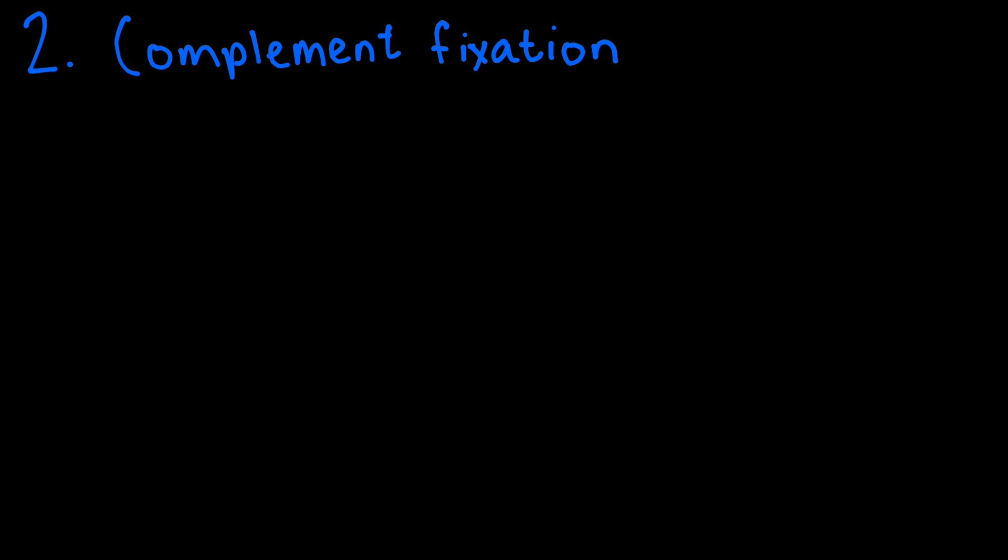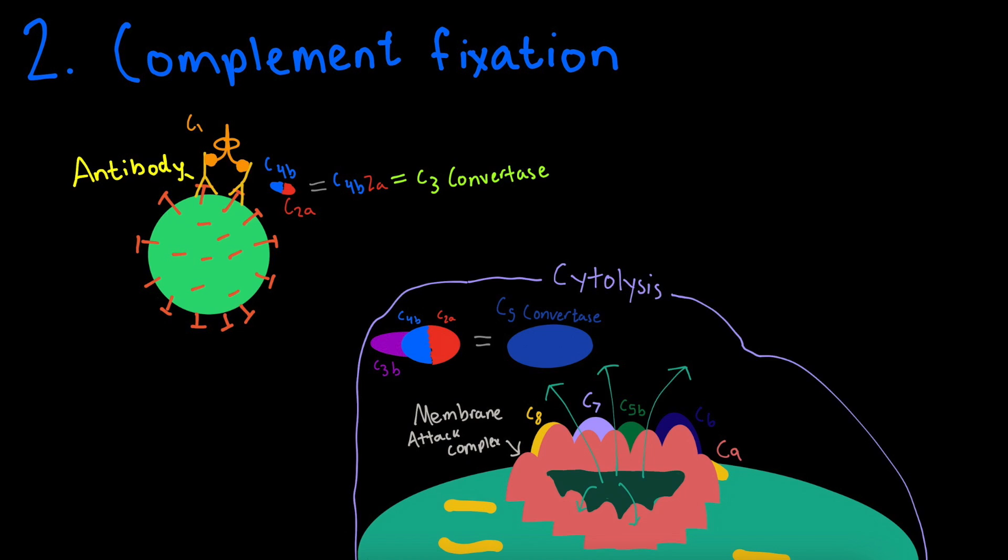The second mechanism includes complement fixation in which antibodies will bind to the antigens of a pathogen, activating the complement system, which results in lysis due to the membrane attack complex discussed in part two.